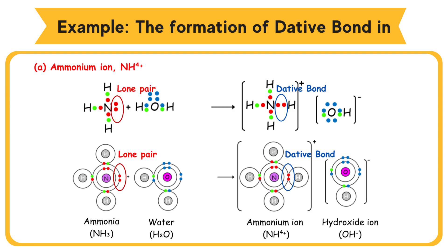Dative Bond is formed when the Nitrogen atom in Ammonium molecule shares one lone pair of electrons with the hydrogen nucleus, forming an Ammonium Ion (NH4+). There is a positive charge on the Ammonium ion because only the hydrogen nucleus has moved to the nitrogen, while the hydrogen has left its electron behind.